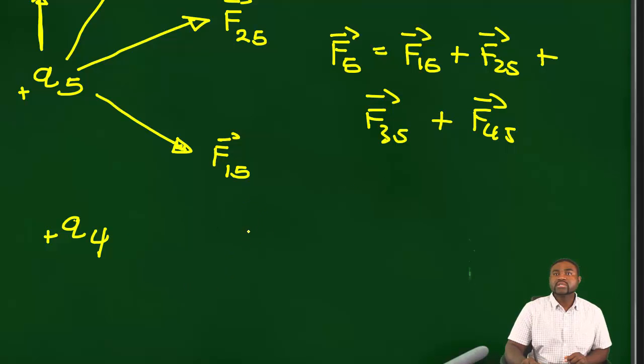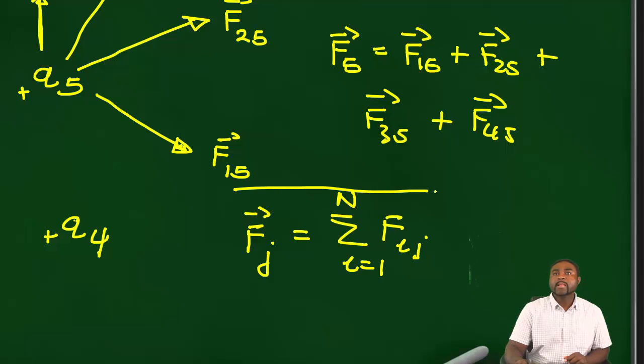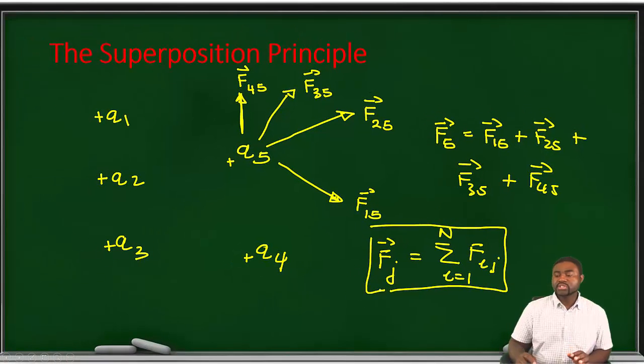Generally, this would mean that F J is equal to the sum of I equal to 1 up to N of F I J. This right here defines what we call the superposition principle.